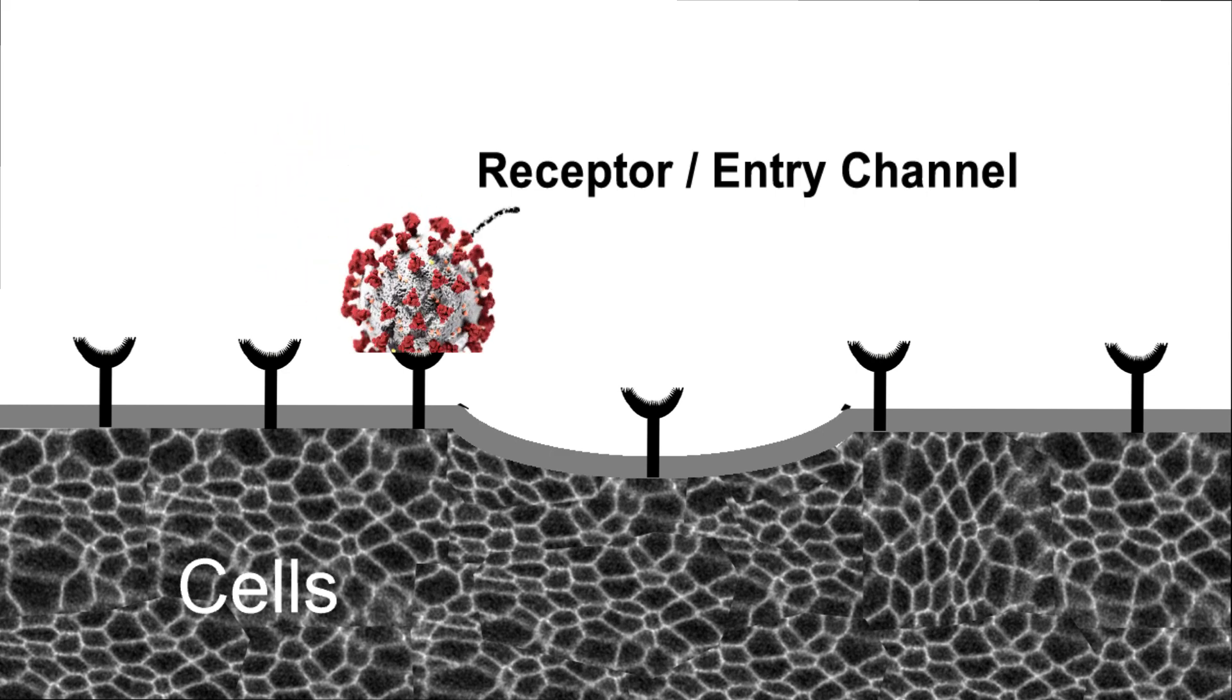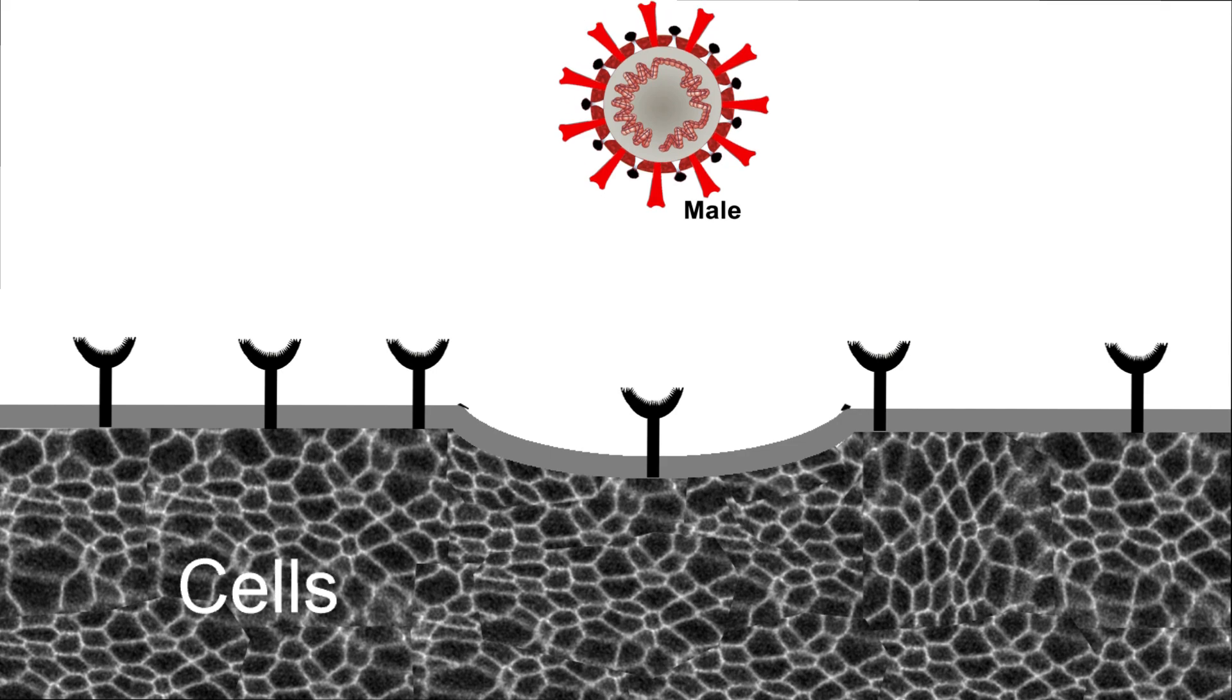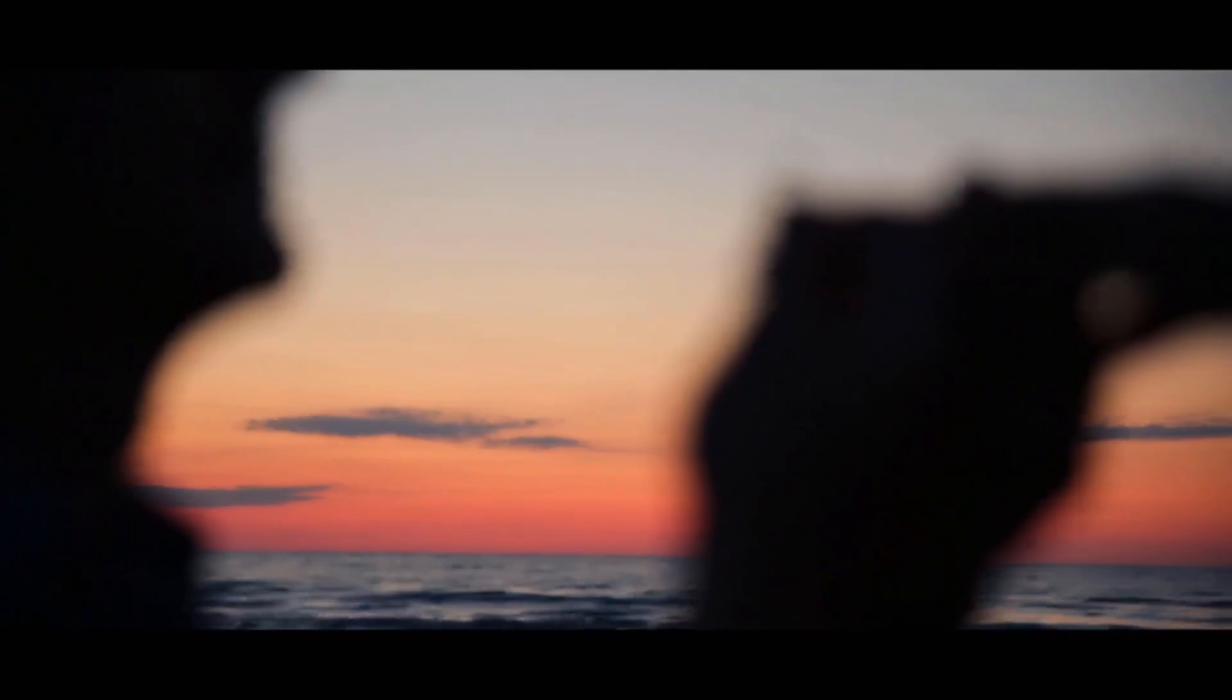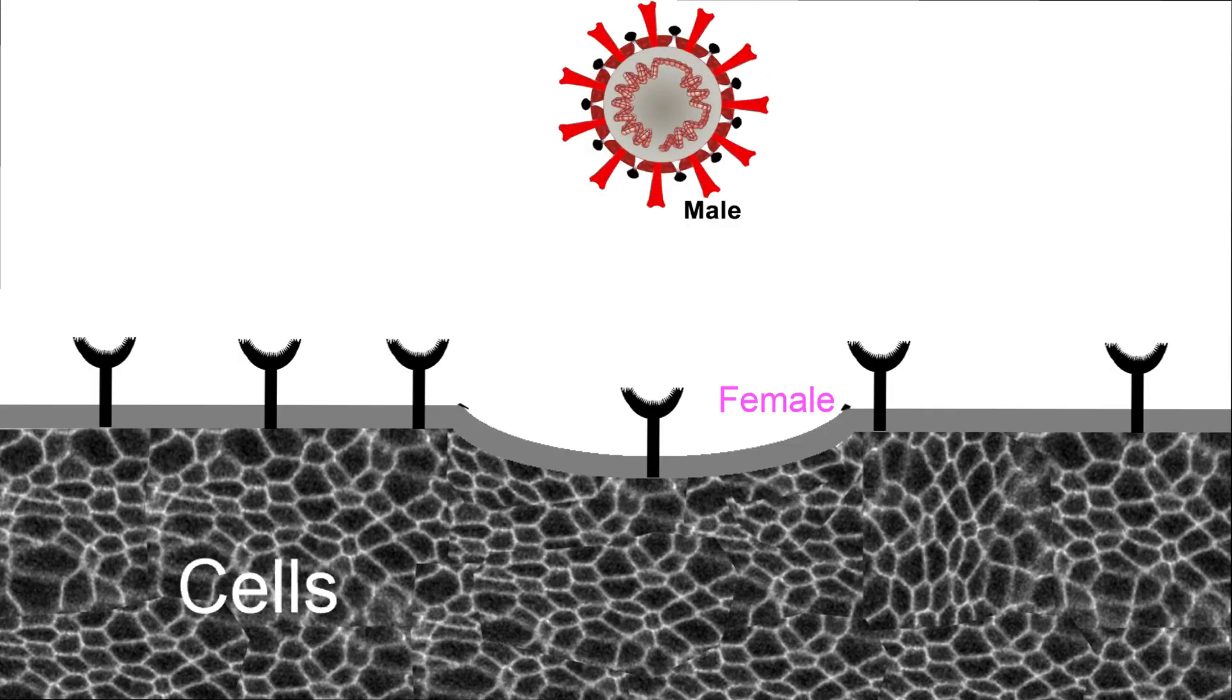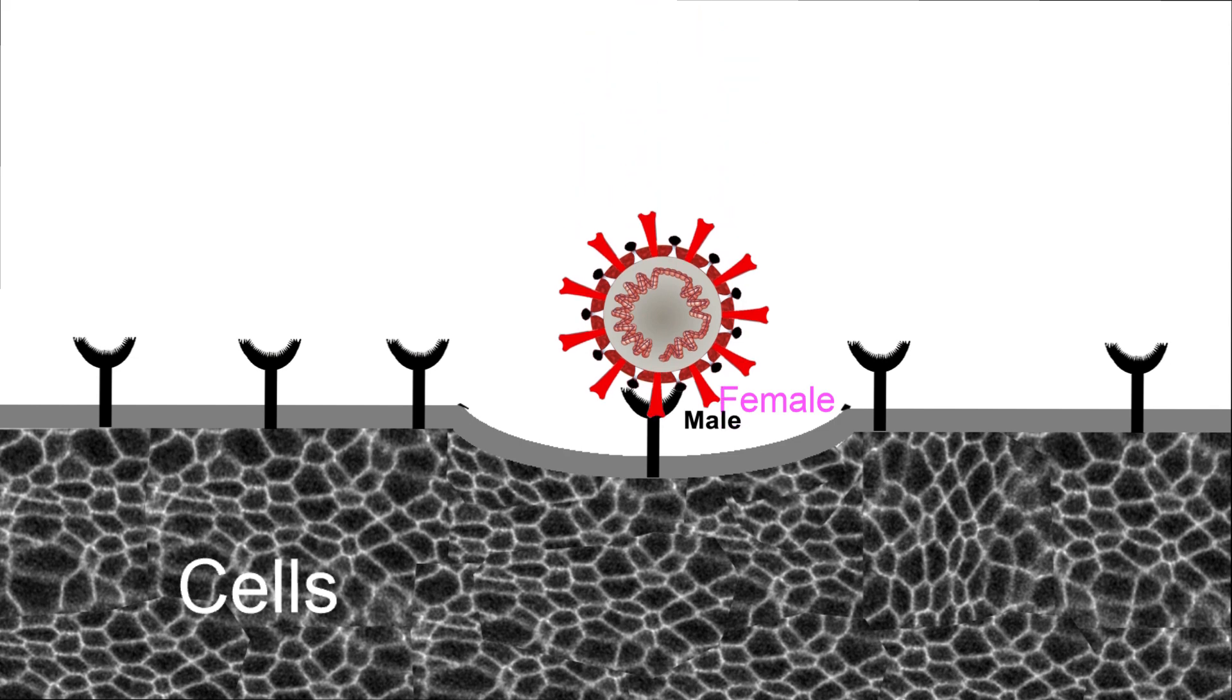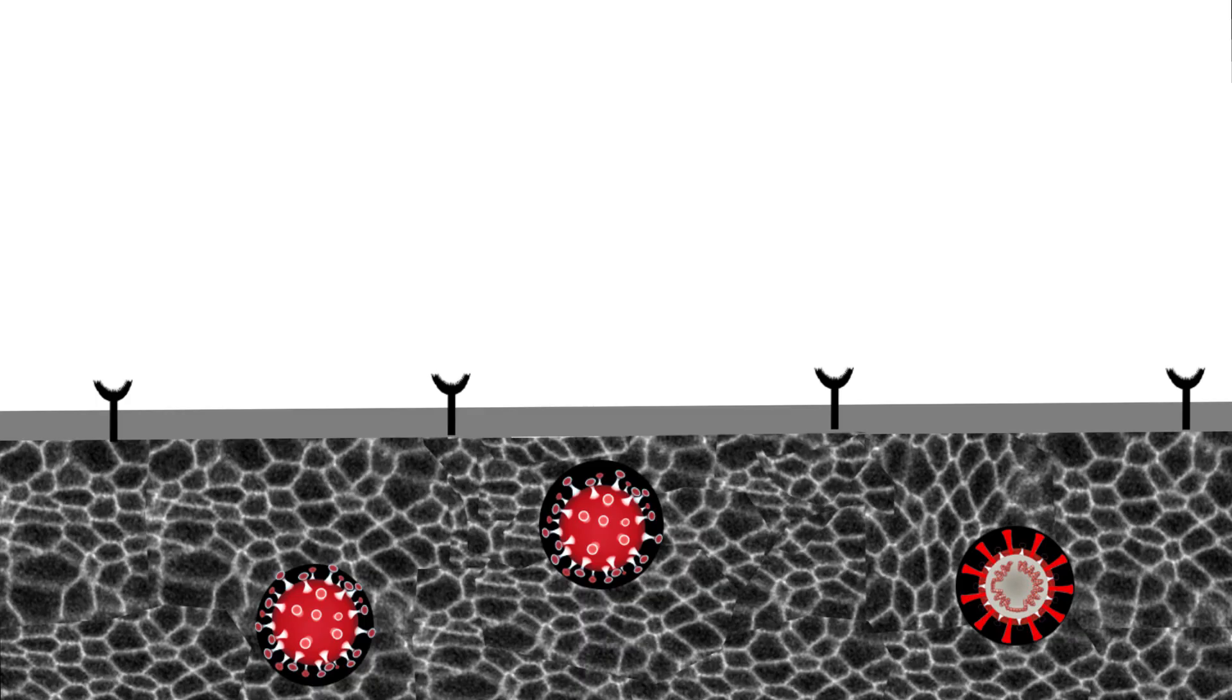This receptor channel name is ACE2 protein. We can compare the spike of coronavirus as male and this receptor as female. When male and female come in contact, they hook up together - it's natural. The same thing happens here. This male spike protein and that female receptor protein attract to each other and make a close bonding. This action allows the virus to get inside your host cell.